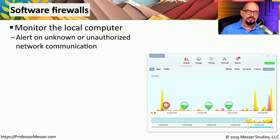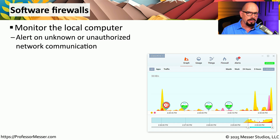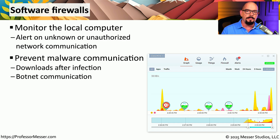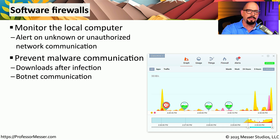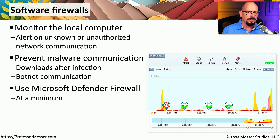Many organizations will also enable Windows Defender Firewall or some type of third-party firewall on all of their endpoint devices. This personal firewall monitors all network communication in and out of the system and identifies anything not allowed to communicate to that endpoint. This is especially important if malware finds a way to get installed onto the operating system, since many malware variants will attempt to communicate outside your network to a command and control server on the internet. This software-based firewall can monitor for those transactions and stop that communication before it leaves the endpoint.